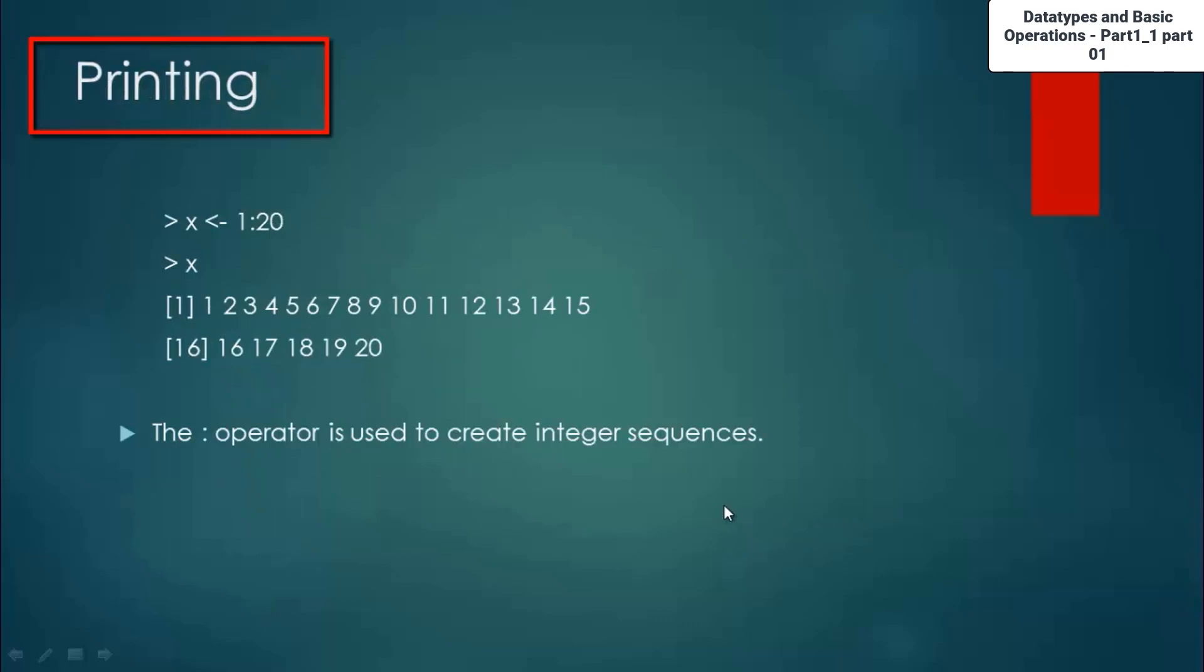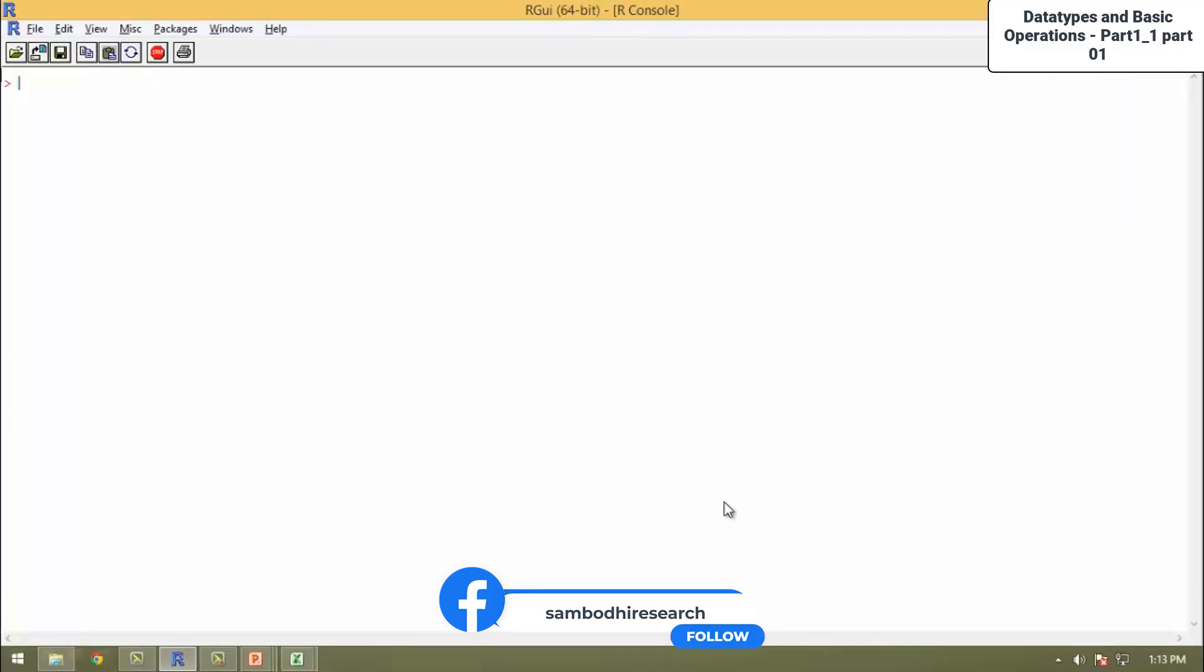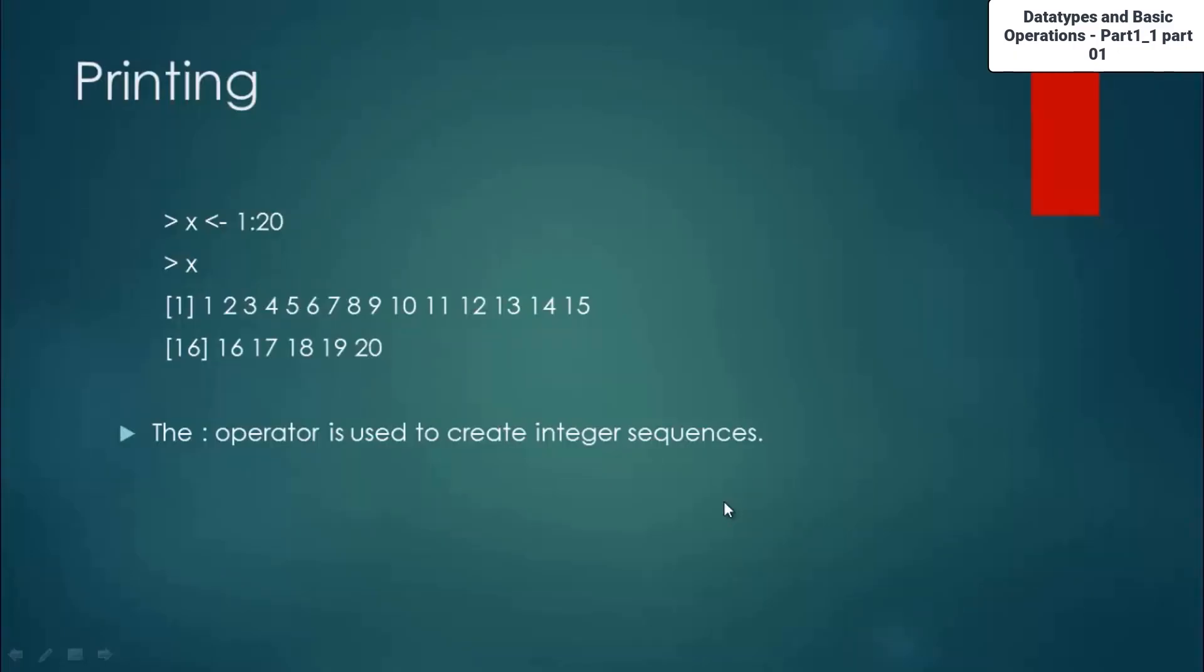Now the next steps of printing. There is a thing in R where you can create sequence of numbers in a single vector. For example, let's say I want to create a vector where I can assign the numbers 1 to 30 in a single vector. I can assign 1 colon 30, which will give 1 to 30 and it will assign it to x. Now if you print x, you can see that there are 1, 2, 3, 4 till 30 assigned to x. x is a vector of integers here. The colon operator is used to create that integer sequences.